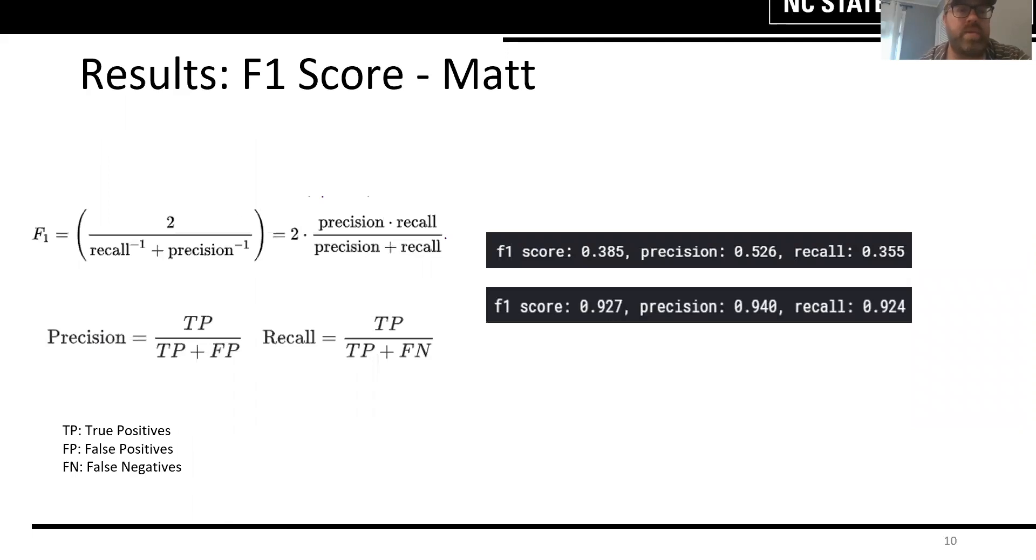Kaggle uses F1 scoring to measure success of a model. F1 scoring uses the ratio of precision times recall over precision plus recall. Precision and recall are ratios of true positives, false positives, and false negatives. The F1 score of our baseline model was under 0.4, while our final model reached almost 93.